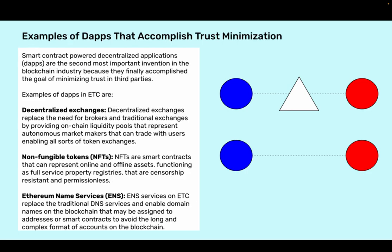Examples of dApps that accomplish trust minimization. Smart contracts power decentralized applications, dApps, which are the second most important invention in the blockchain industry because they finally accomplished the goal of minimizing trust in third parties. Examples of dApps in ETC are decentralized exchanges, which replace the need for brokers and traditional exchanges by providing on-chain liquidity pools that represent autonomous market makers that can trade with users, enabling all sorts of token exchanges.